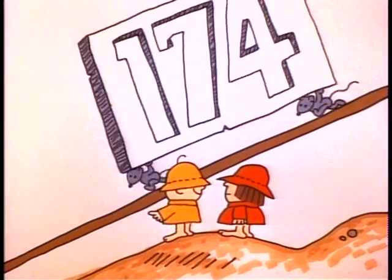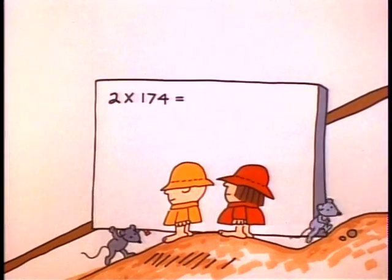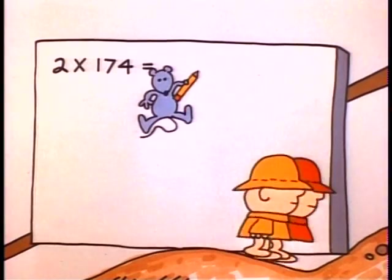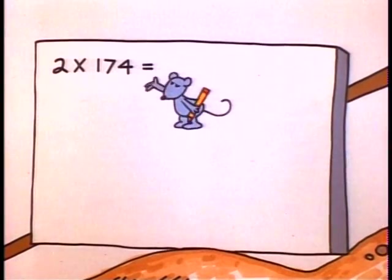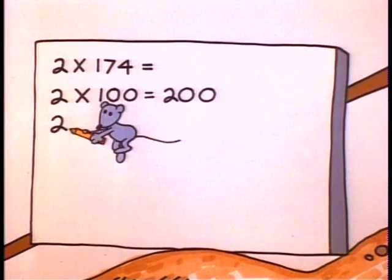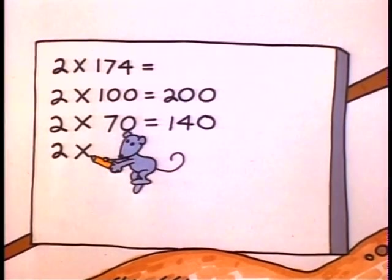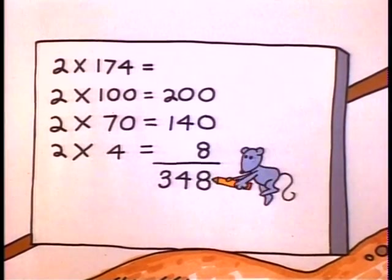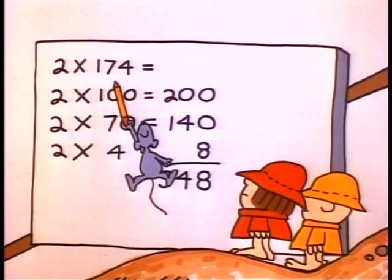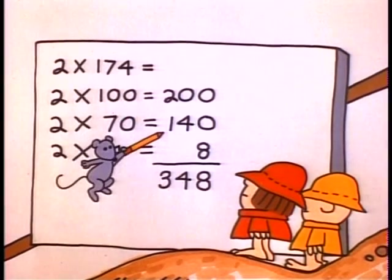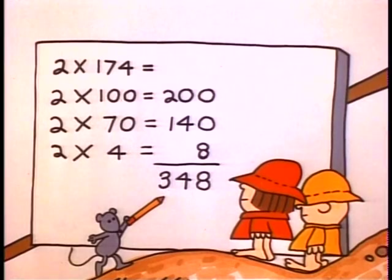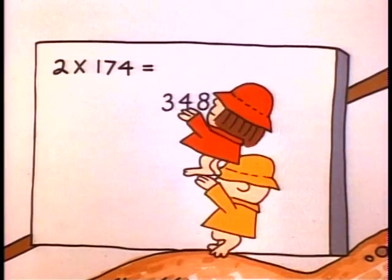Now if you want to multiply two times a hundred and seventy-four, or some big number like that — two times a hundred and seventy-four equals two times a hundred, plus two times seventy, plus two times four, that's all. So two times a hundred and seventy-four equals two hundred plus a hundred and forty plus eight — that's three hundred and forty-eight. It's elementary!